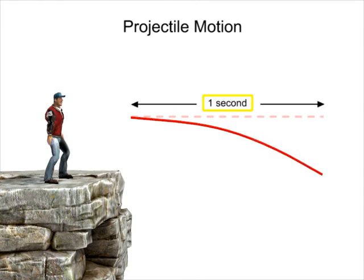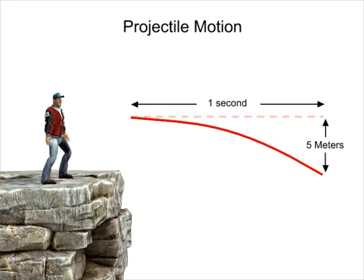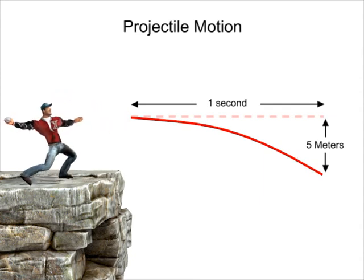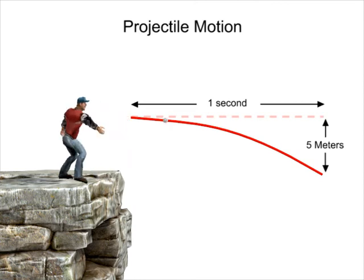After one second, the ball will have fallen five meters from the imagined line of gravity-less travel. No matter how fast the person throws the ball, this fallen distance of five meters after one second of air time will remain the same.